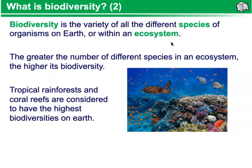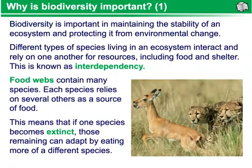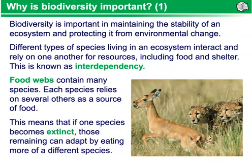Tropical rainforests and coral reefs are considered to have the highest biodiversities on our planet. Biodiversity is important in maintaining the stability of an ecosystem and protecting it from environmental change. Different types of species living in an ecosystem interact and rely on one another for resources, including food and shelter. This is known as interdependency.